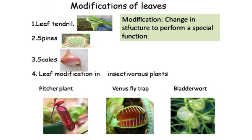Now we come to modifications of leaves. Modification means a change in structure to perform a special function. So leaf modification means a change in the structure of a leaf to perform a different or special function. Four modifications are given in your book.